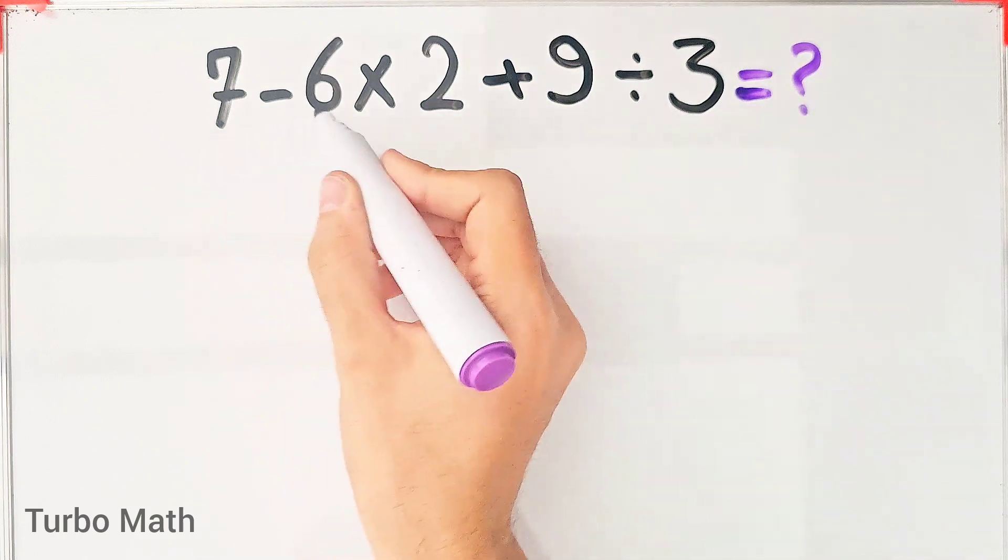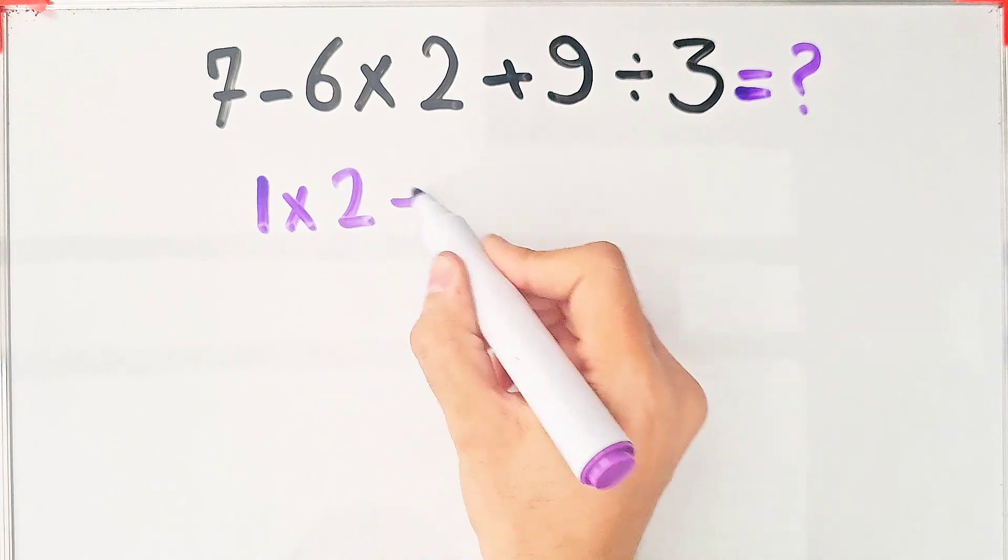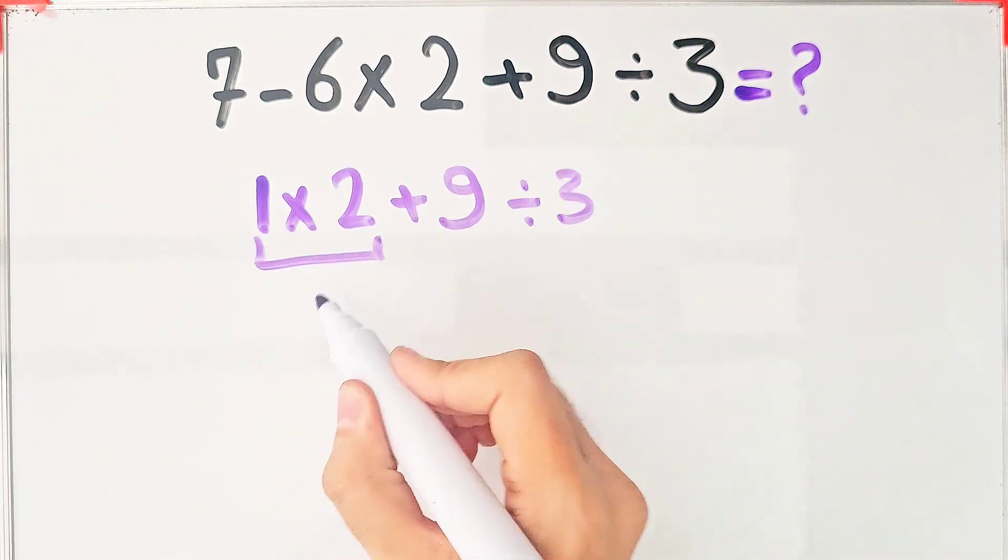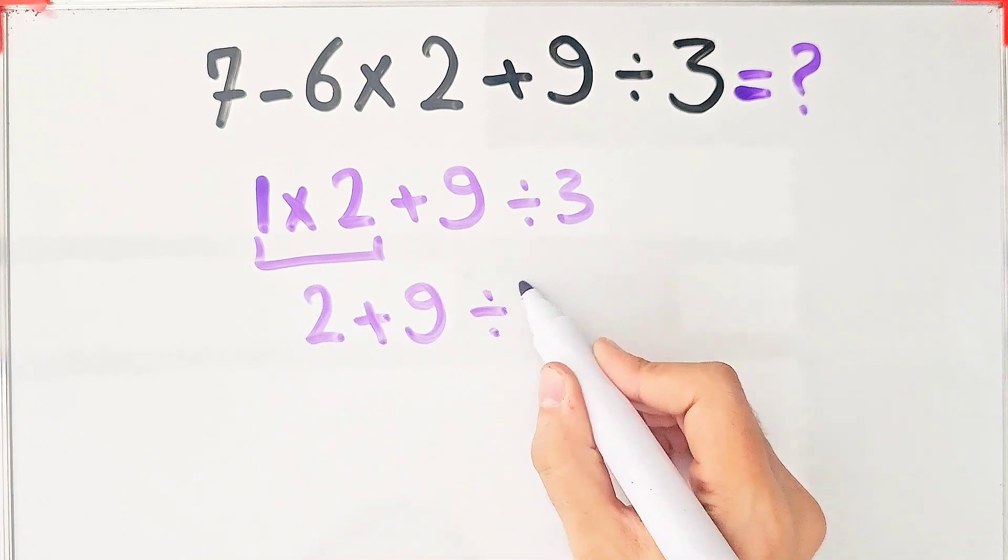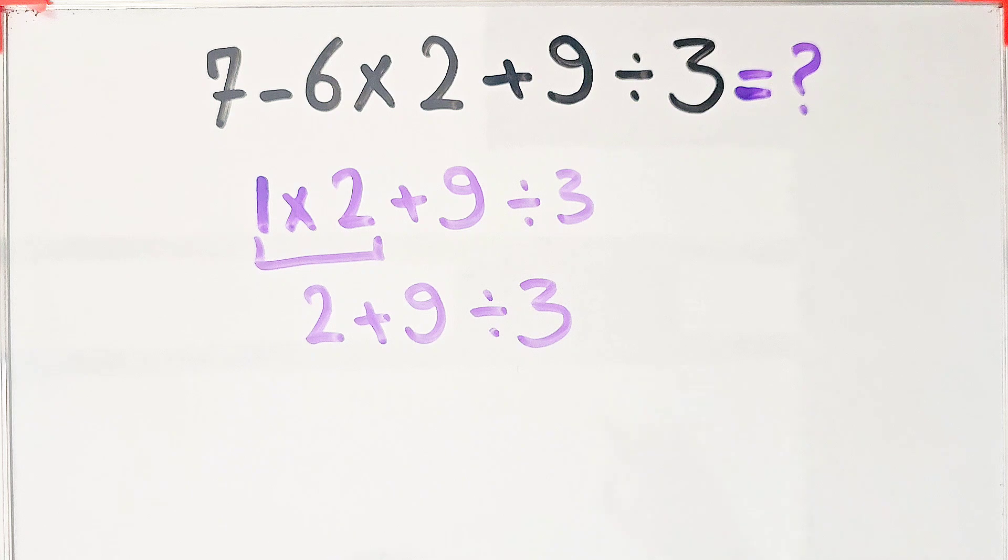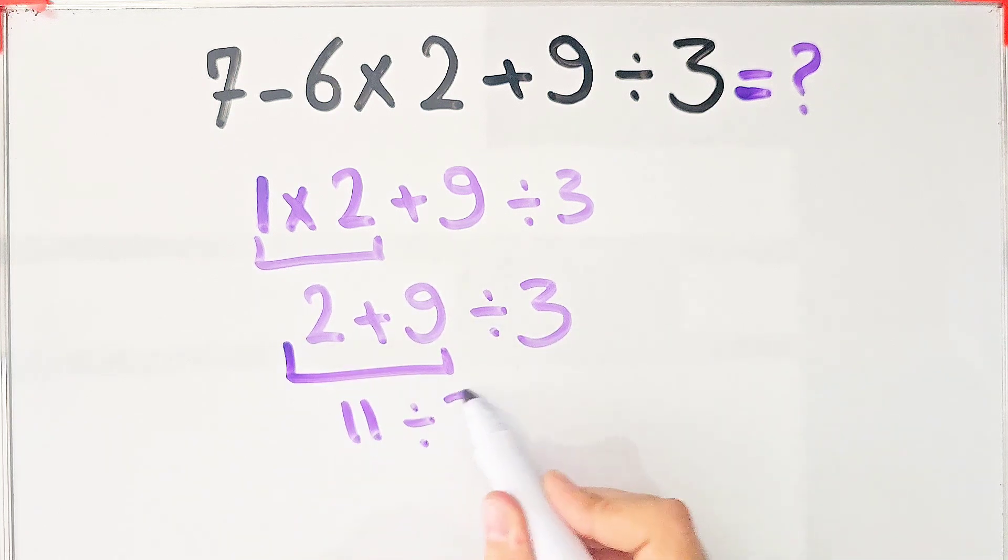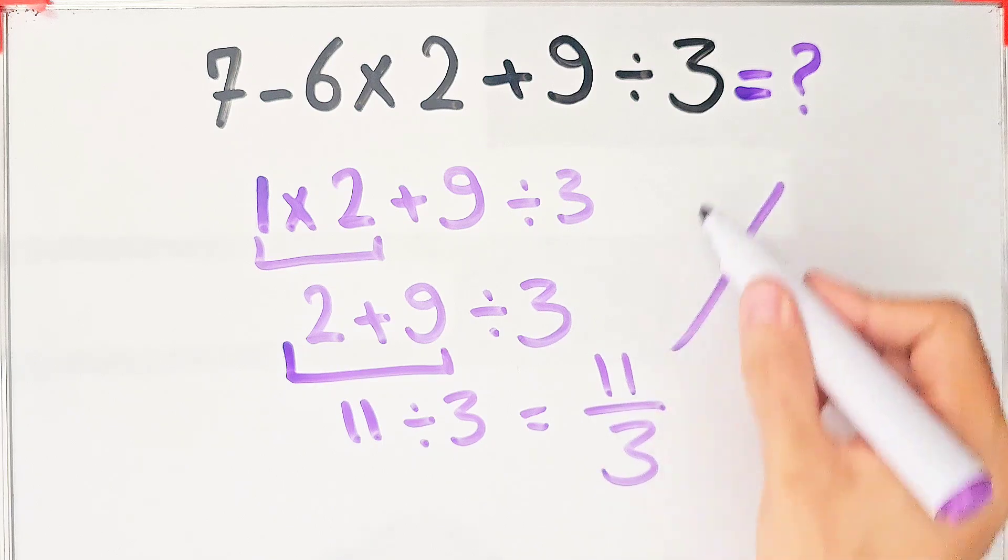In the wrong way of solving this question, some people start from the left and simplify it. 7 minus 6 equals 1. 1 times 2 plus 9 then divided by 3. 1 times 2 equals 2. And 2 plus 9 then divided by 3. 2 plus 9 equals 11. And 11 divided by 3 equals 11 over 3. But this answer is definitely wrong.